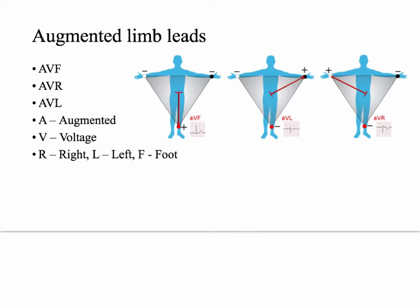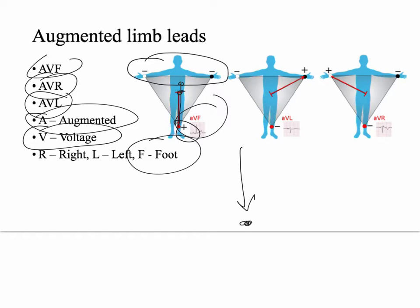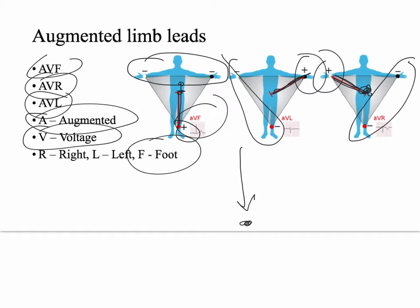A little while later in history, somebody realized you can combine negative leads and form a virtual negative endpoint right at the heart, then use the leg as the positive lead. This gives AVF — augmented voltage foot. So the vector looks straight down, meaning we're looking straight up at the heart. We also have AVR and AVL leads. AVR uses the right hand as the positive vector, while AVL uses the left arm. These are called unipolar limb leads because there is no true negative — we're basically using the heart as our negative by combining the two other leads together. Think of it as vector sums.